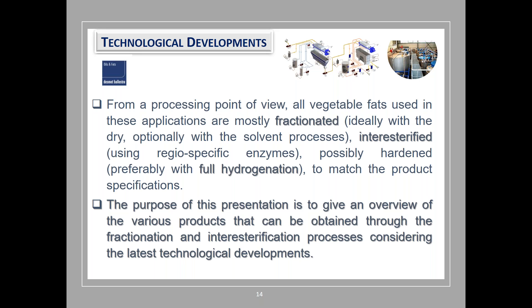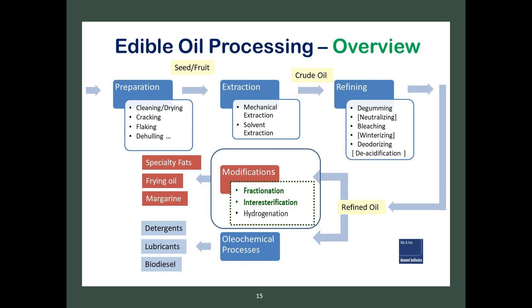The purpose of this presentation is to give an overview of the various products that can be obtained through fractionation and interesterification processes, considering the latest technological developments. This is a general overview of edible oil processing, comprising preparation of seeds, oil extraction, and oil refining to remove impurities from crude oil. The refined oil may undergo several post-treatments — fractionation, interesterification, and hydrogenation — to modify its melting properties and extend its applications in food formulation. Alternatively, it can enter oleochemical processes.